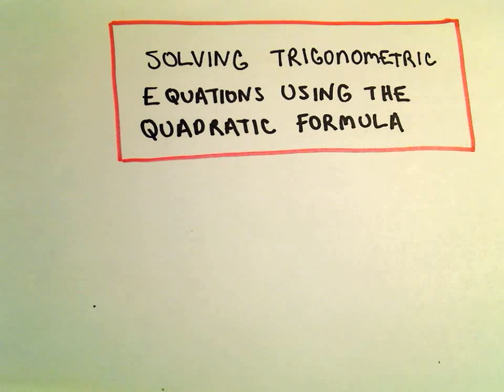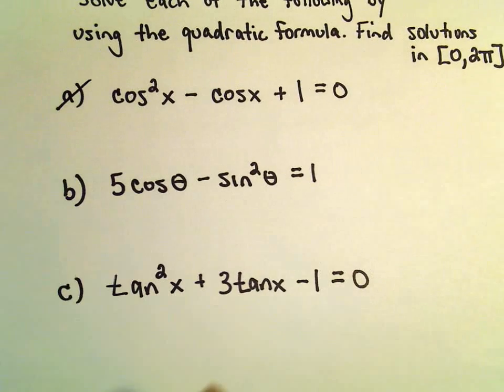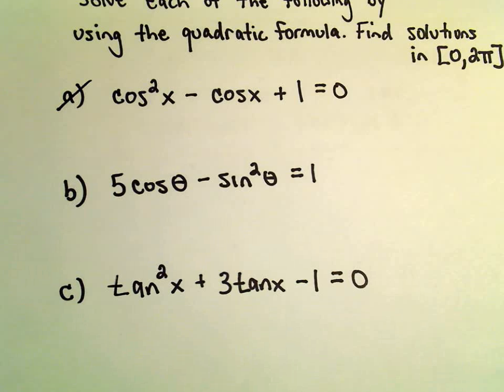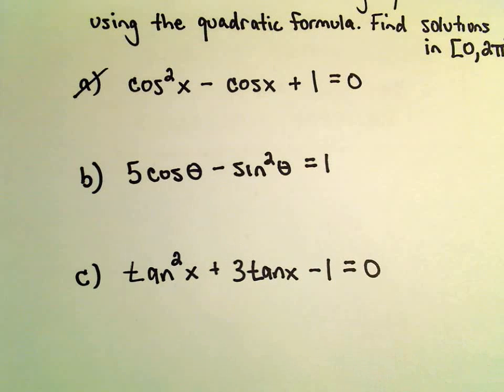Here we're going to look at another example of solving a trig equation by completing the square. We've got 5 cosine theta minus sine squared theta equals 1.